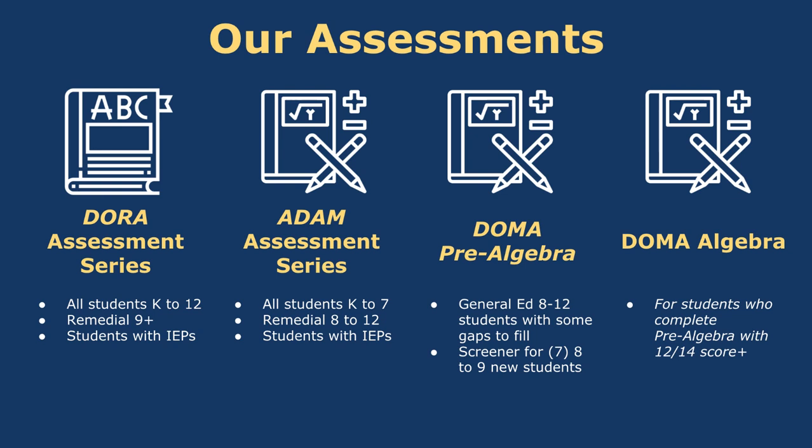DOMA Pre-algebra is for students who have a solid base but are a little older — eighth grade to high school — and have some gaps to fill. If they're still somewhat remedial, DOMA Pre-algebra is appropriate. However, if a student is eighth grade or above and you know their gaps probably go below the fourth-grade level, use ADAM instead. You can also use DOMA Pre-algebra as a quick screener: if new students come in at seventh or eighth grade and they're ready for algebra one, the test will take only 10–15 minutes, giving you fast confirmation of a solid foundation.